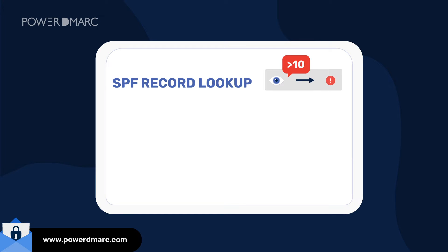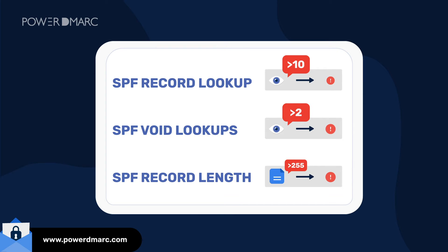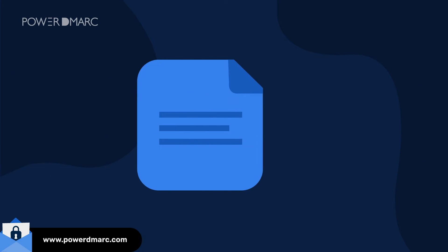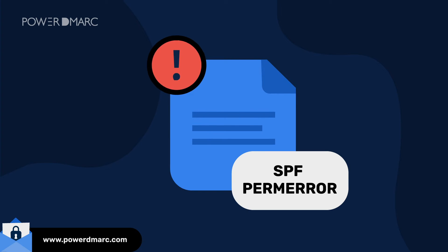You have exceeded the maximum number of permitted void lookups, with a limit of 2, or your flattened SPF record length has exceeded the 255 character limit. All of the above returns an SPF permerror result. Unlike the other SPF errors, SPF permerror is much more tricky and complicated to resolve.